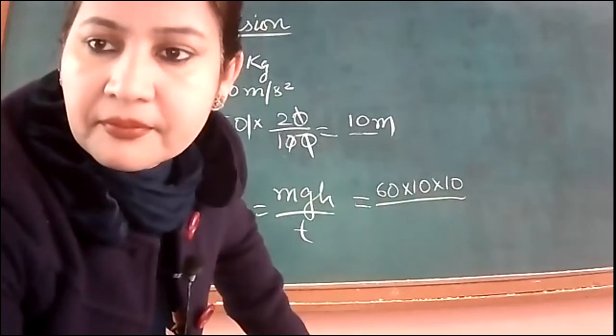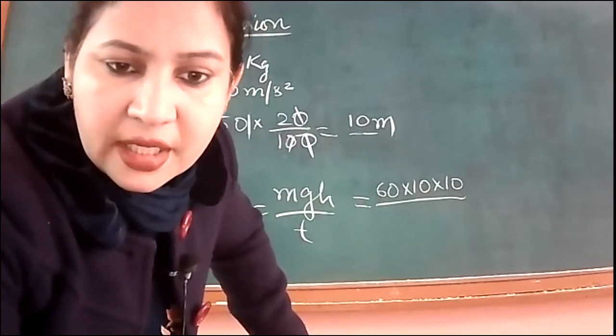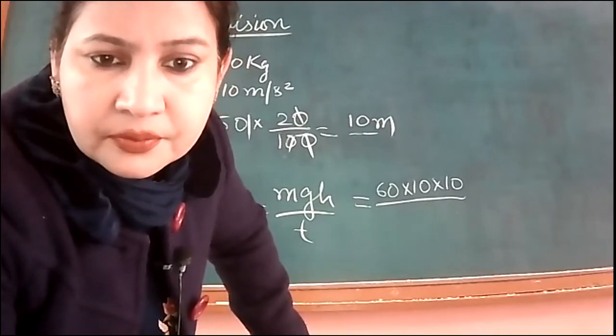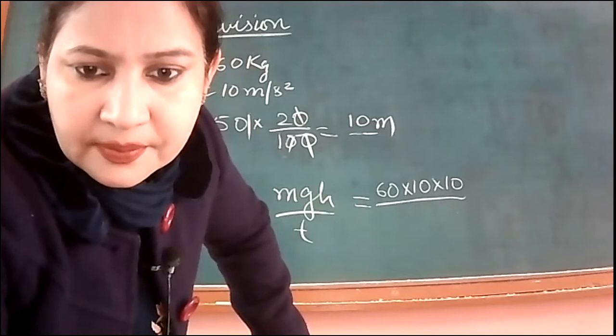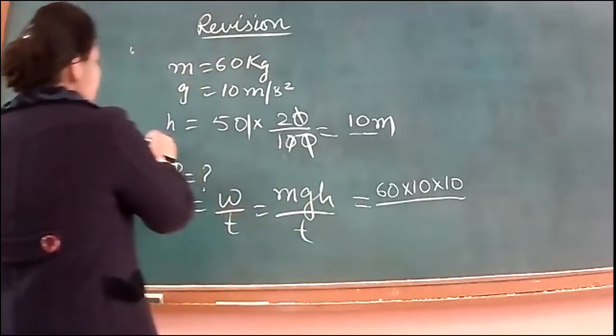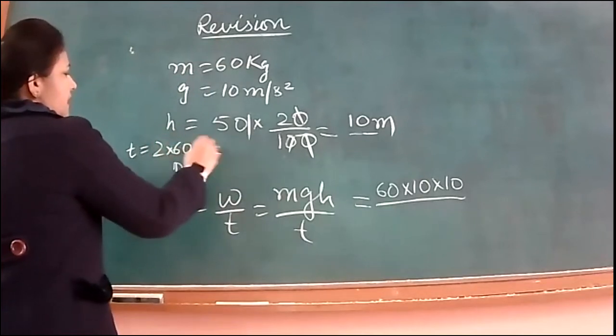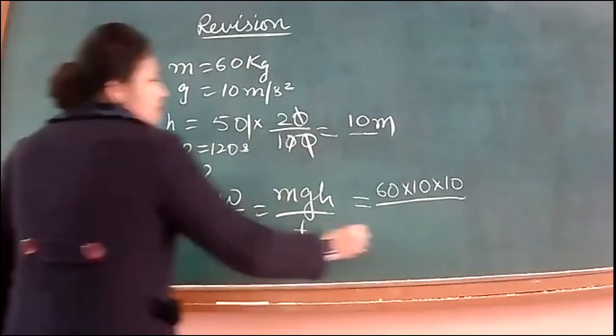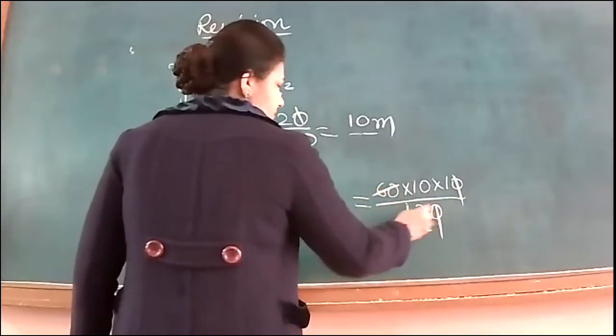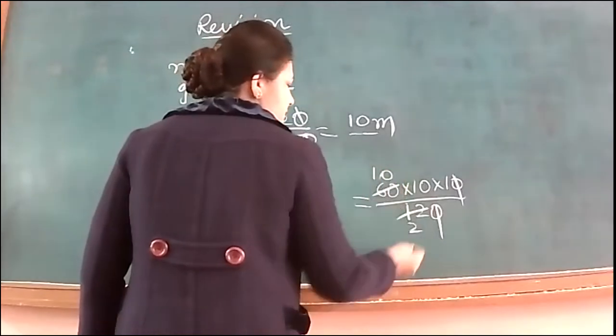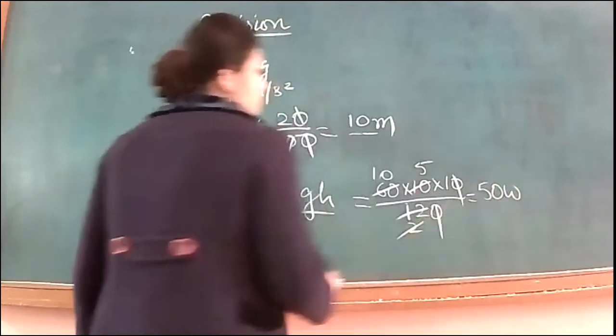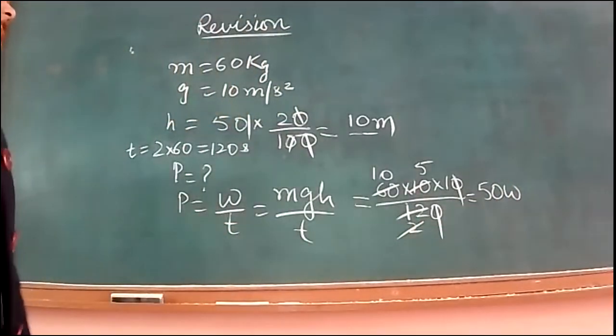Time, which minutes? How much time has been given? Time is 2 minutes. Yes, time given is 2 minutes. 2 minutes means 120 seconds. So divided by 120. 50 watt. So the power is how much? That is 50 watt.